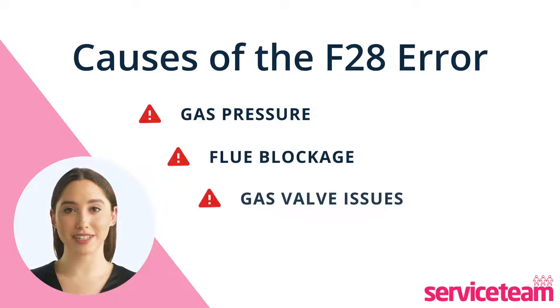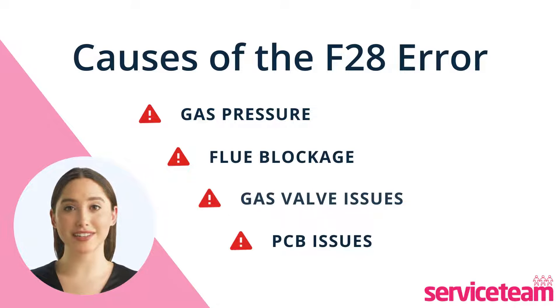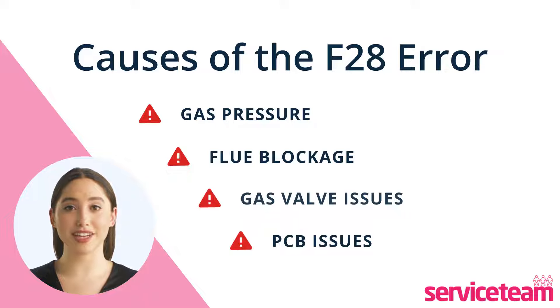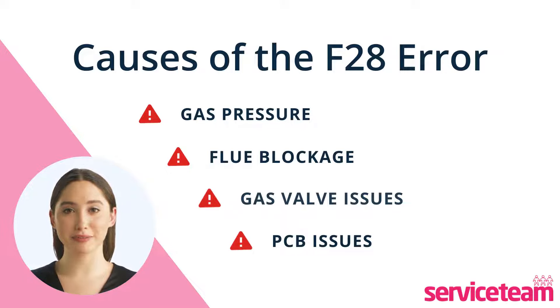Another cause is PCB, or Printed Circuit Board, issues. It acts as the boiler's brain, coordinating combustion processes. If you see an F28 error code, it could mean that the PCB is not sending signals correctly.